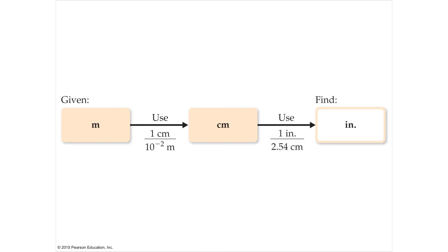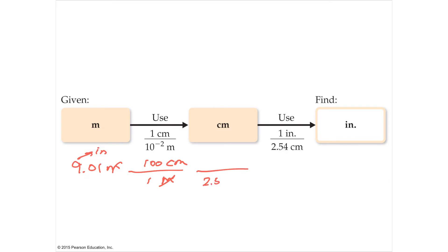Now let's go from meters to inches. You know 2.54 centimeters to the inch. Starting with 9.01 meters and wanting inches, you first get rid of meters: in one meter there are 100 centimeters. Meters cancel and you're in centimeters. Then, since there are 2.54 centimeters in one inch, centimeters cancel and you're in inches — done. The calculation is 9 times 100 divided by 2.54.